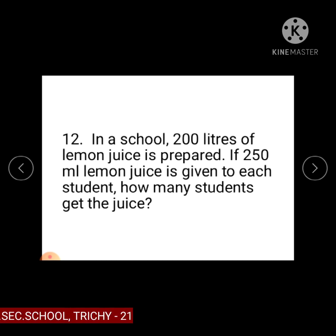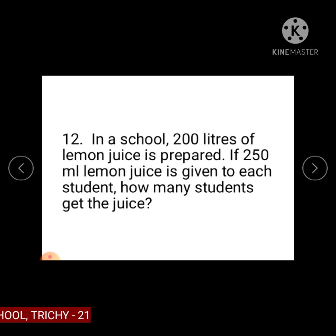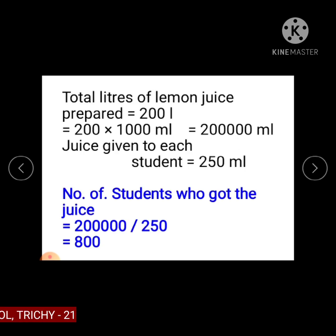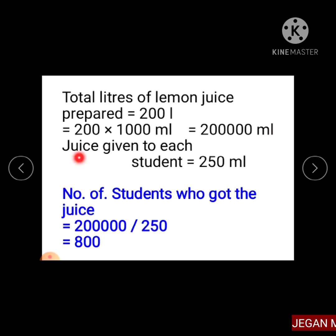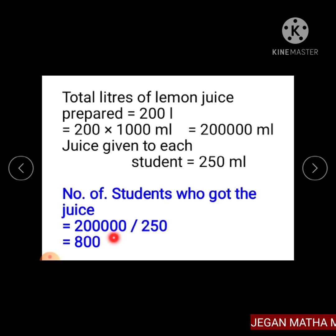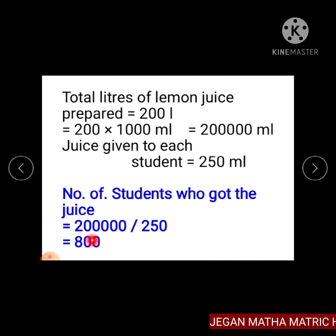Question number 12. In a school, 200 litres of lemon juice is prepared. If 250 ml of lemon juice is given to each student, how many students get the juice? Total lemon juice prepared equals 200 litres, which is 200 into 1000 ml, equal to 200,000 ml. Juice given to each student equals 250 ml. So, number of students equals 200,000 ml divided by 250 ml, which gives 800. So, 800 students got the juice.